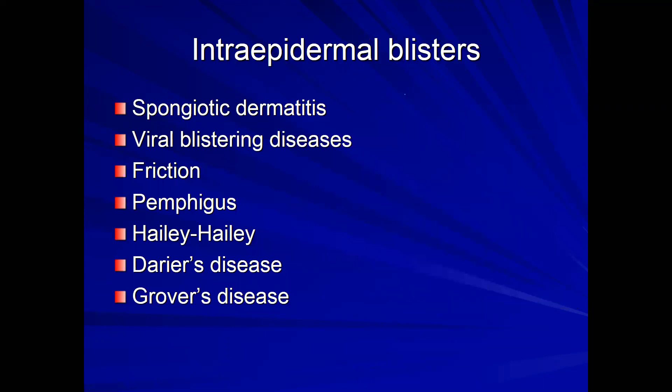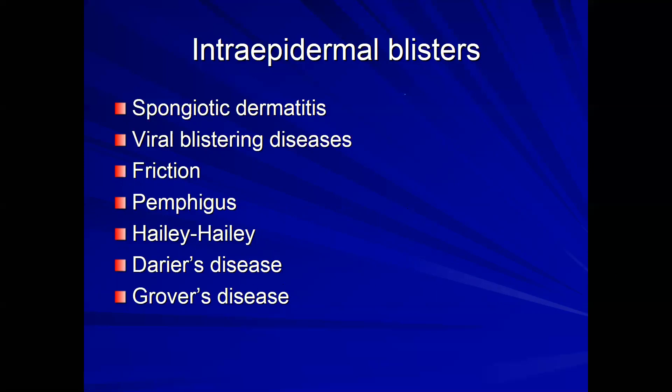Intraepidermal blisters include subcorneal blisters but imply you're a little lower in the middle of the epidermis. These blisters can be caused by acute spongiotic dermatitis, blistering viral exanthems such as Coxsackie (with ballooning degeneration) or herpes virus infection (with molding, margination, and multinucleation), friction or trauma, autoimmune blistering disorders, genetic blistering disorders, and idiopathic disorders such as Grover's disease.